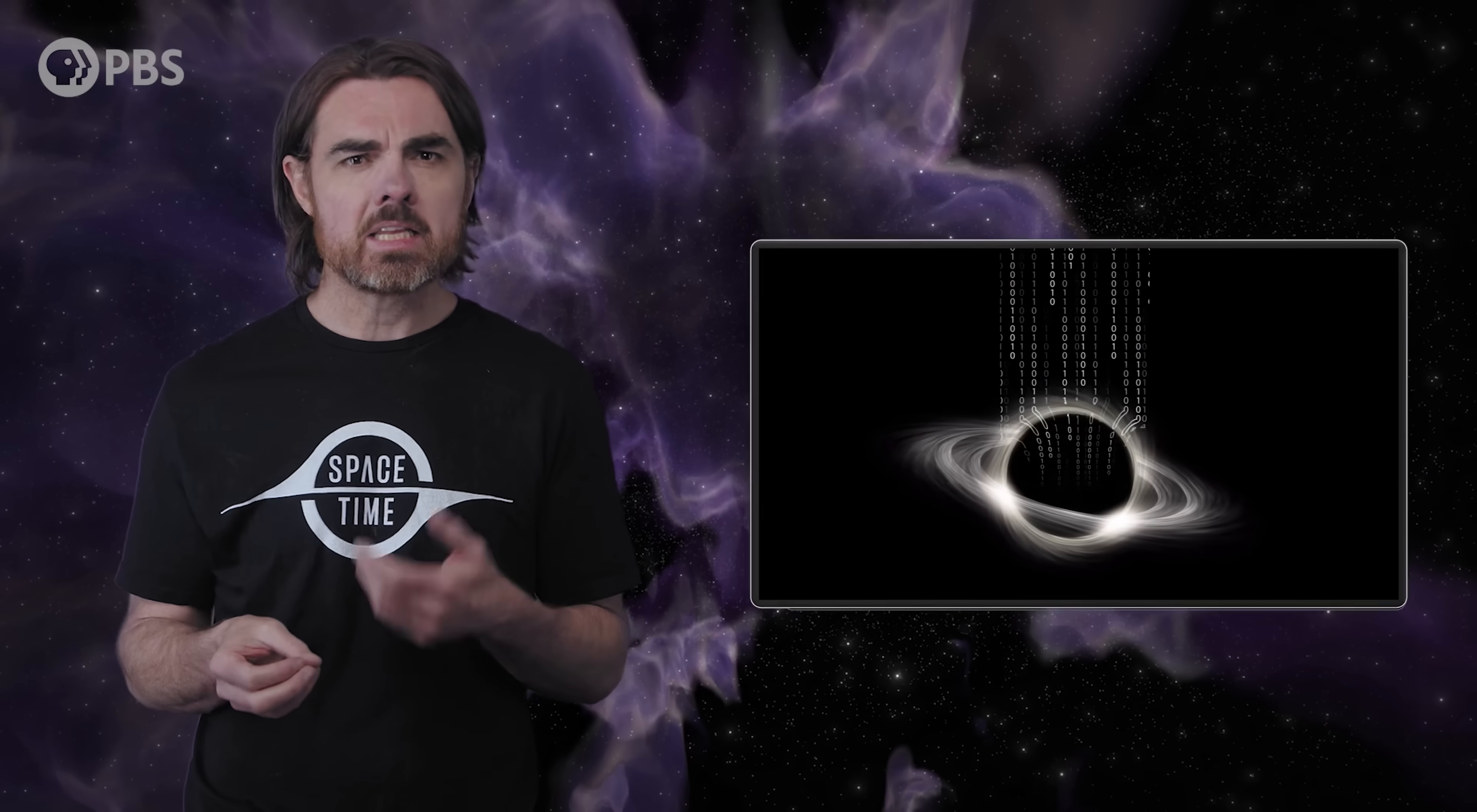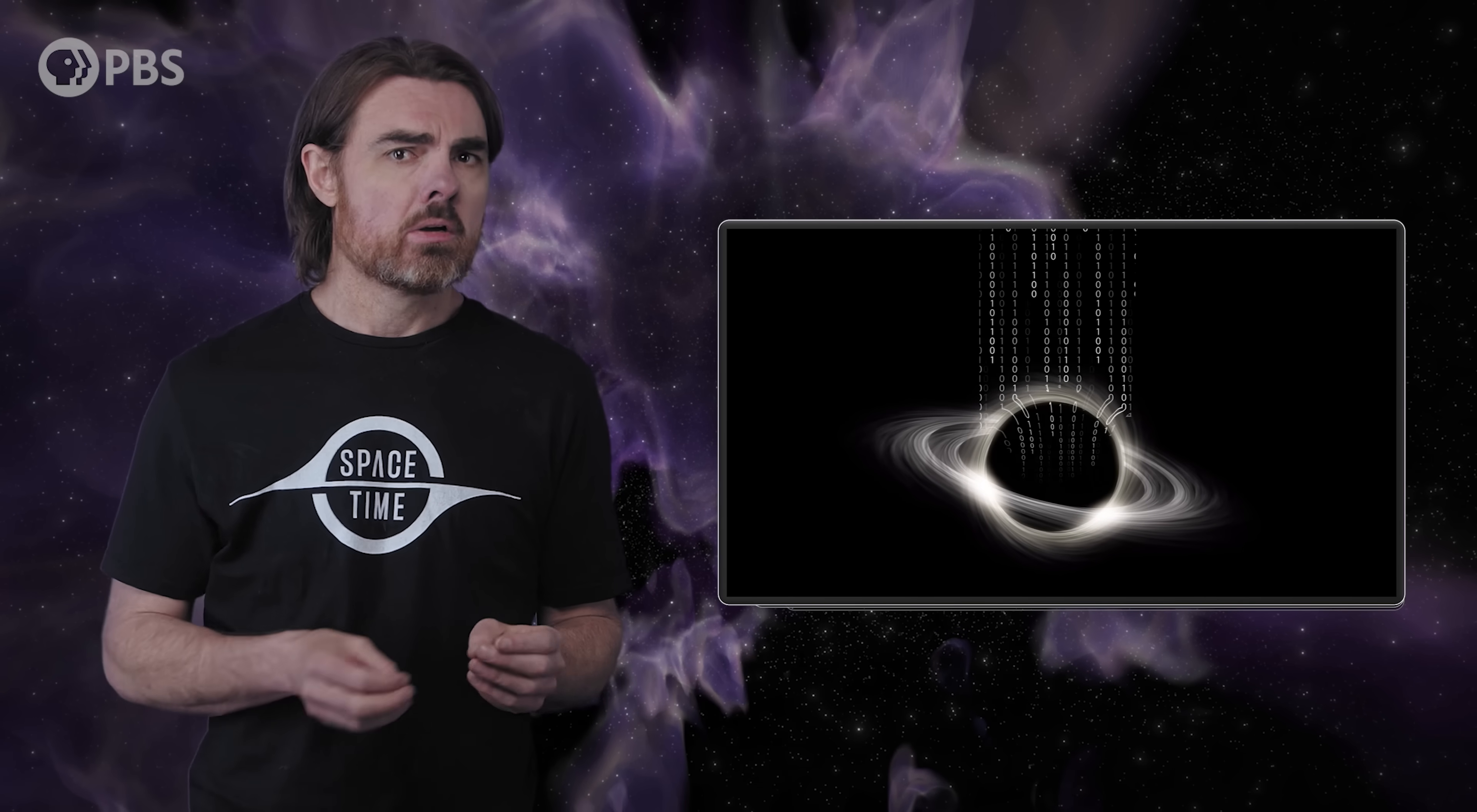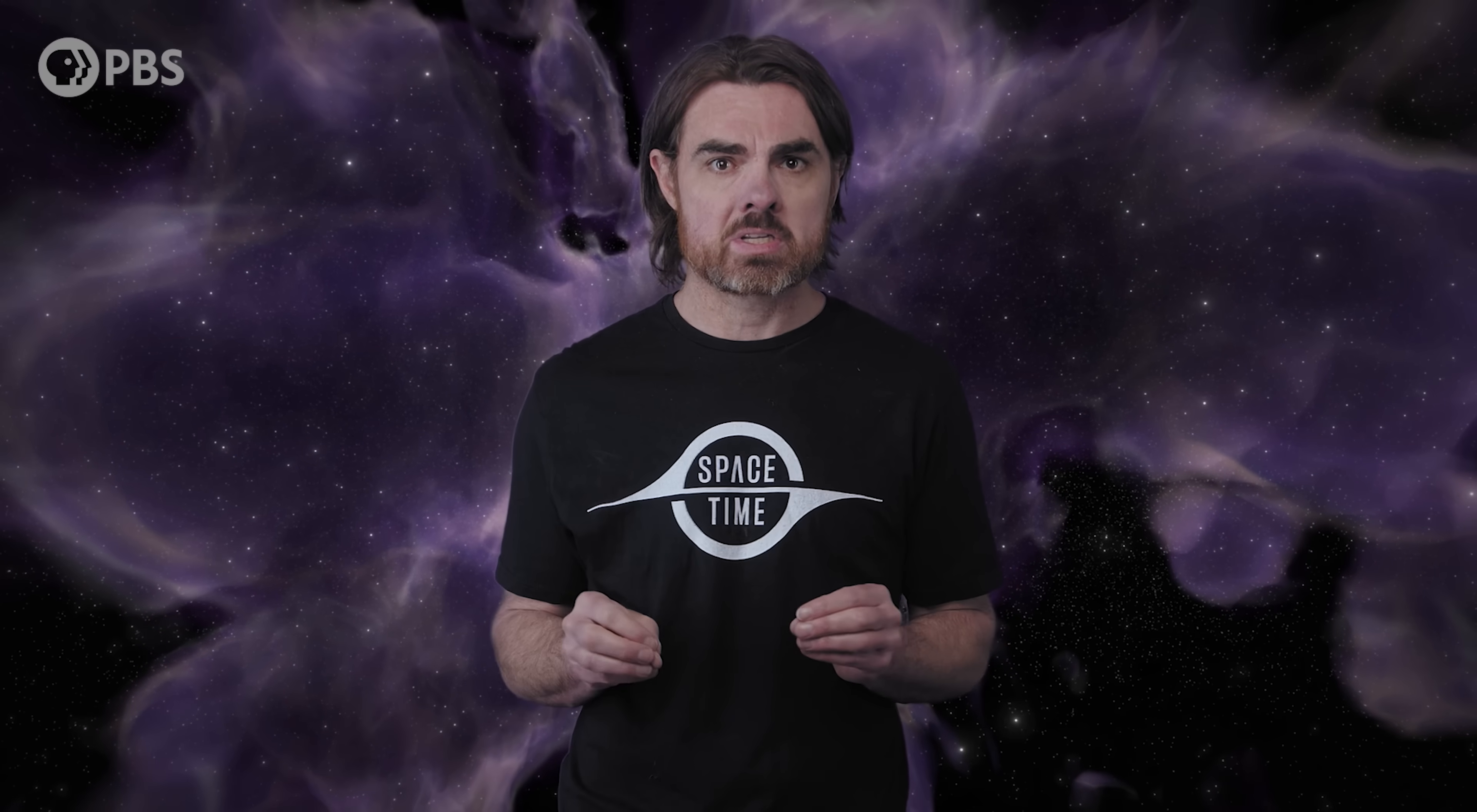In particular, in thinking about what happens to quantum information in a black hole. This is ultimately going to lead to a deep connection between entanglement and wormholes in the ER equals EPR conjecture. And the same line of reasoning is going to completely mess with our intuition about where information exists, leading to black hole complementarity. We'll get to these in upcoming episodes, but today we want to set up the contradiction that drives all of these.